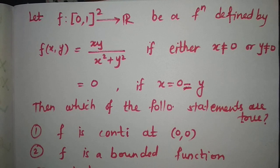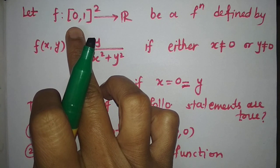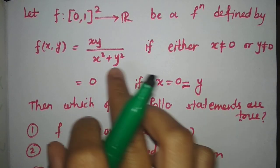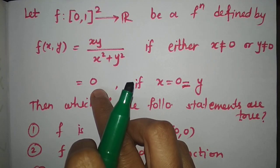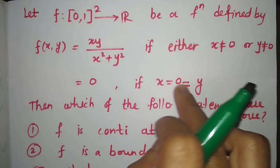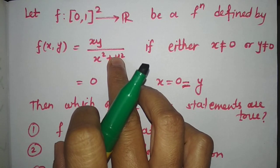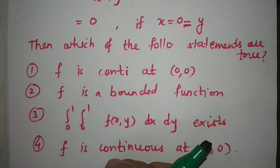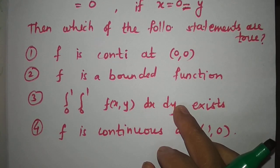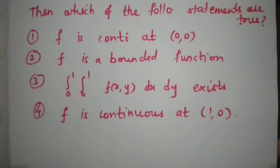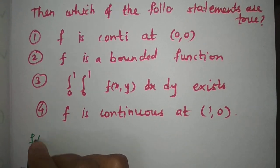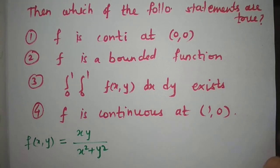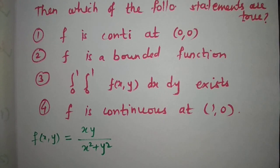Now let us solve another question. Let f be defined from [0,1] × [0,1] to ℝ by f(x,y) = xy/(x² + y²) if either x is non-zero or y is non-zero, and f(x,y) = 0 if both x and y are zero. We must determine which of the following statements are true. The first is: f is continuous at (0,0).